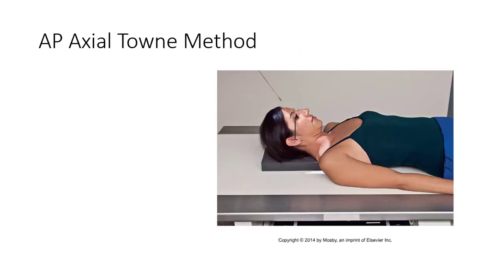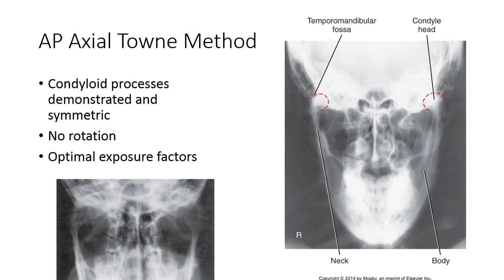For the AP axial Towne's method, place the patient in the upright seated or supine position and ensure the OML is perpendicular to the IR. You may also use the IOML with a greater tube angle. If the OML is used, place a 35 degree caudal angle to enter the glabella. If the IOML is used, angle 42 degrees caudal to the glabella. The increased angle compared to the traditional 30 degree Towne's angle demonstrates the condyloid processes, which should be symmetrical and demonstrated without rotation.